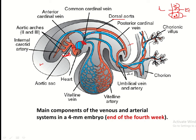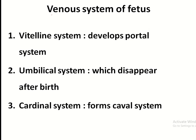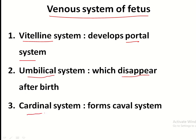Regarding the fate of the venous system of the fetus: the vitelline vein develops into the portal system; the umbilical vein disappears after birth; and the cardinal system forms the caval system — specifically the superior vena cava, and part of the inferior vena cava is also derived from the caval system.